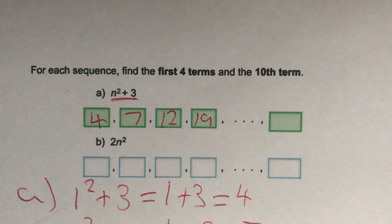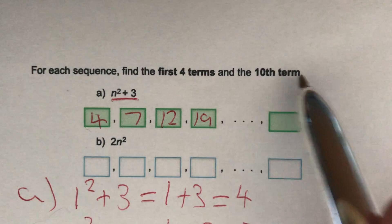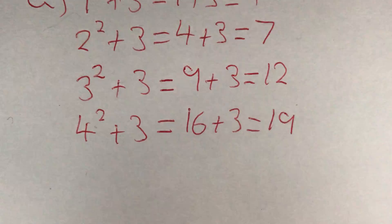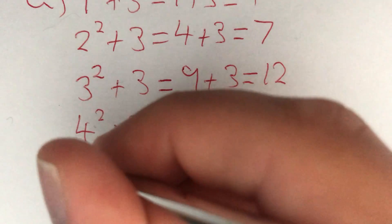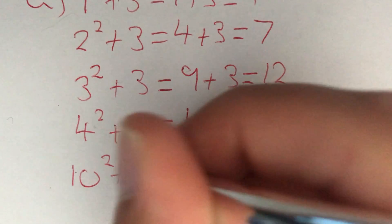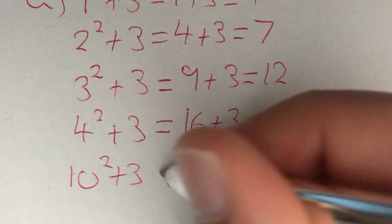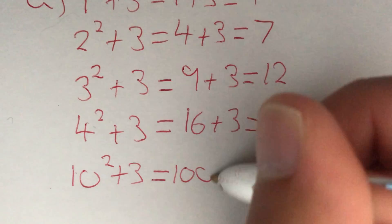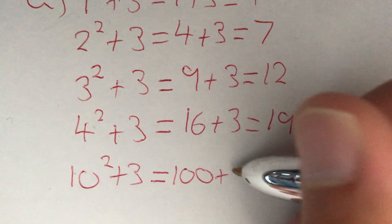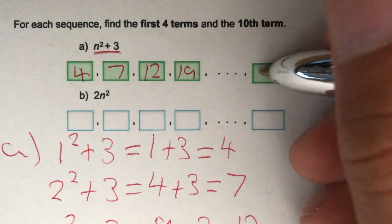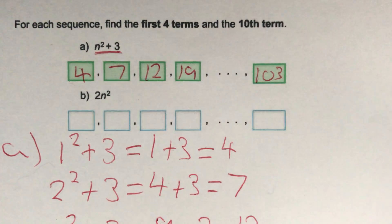Now we're asked for our tenth term. All we have to do is replace n with 10. So we do 10 squared plus 3. 10 squared gives us 100, add 3, we get 103. So our tenth term is going to be 103.